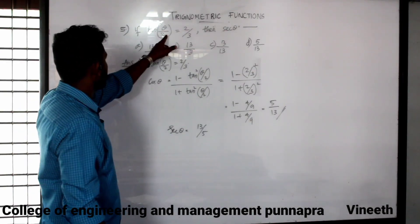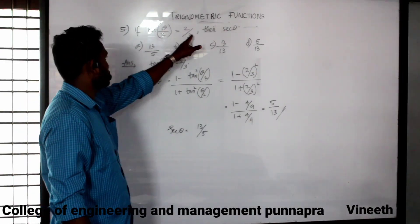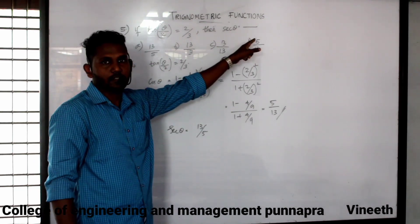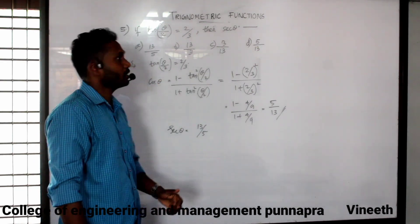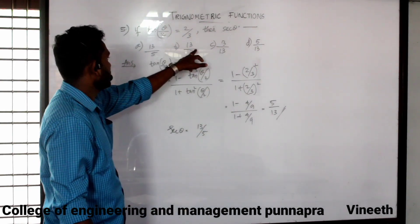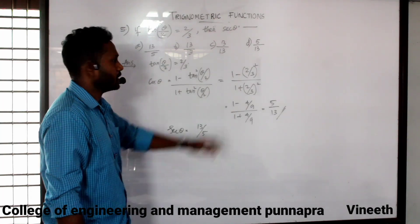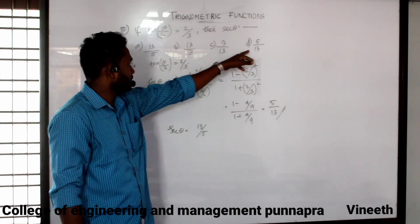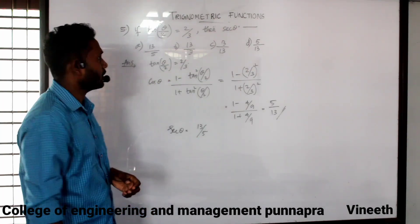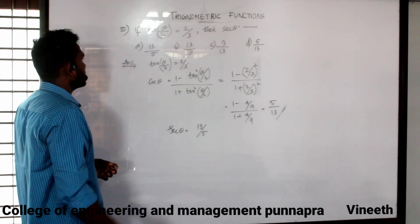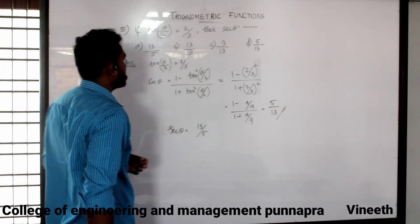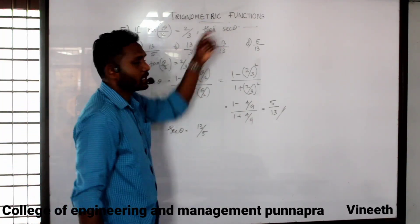Now: if tan theta by 2 is equal to 2 by 3, then find cos theta. The options are 13 by 5, 13 by 3, 3 by 13, and 5 by 13. If tan(θ/2) is equal to 2 by 3, find cos theta.